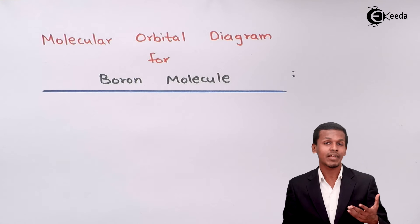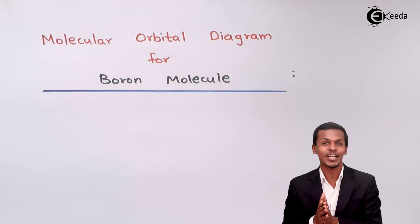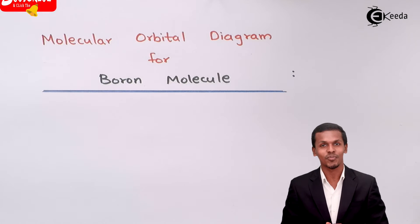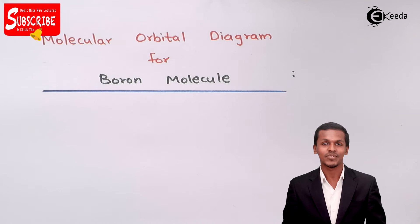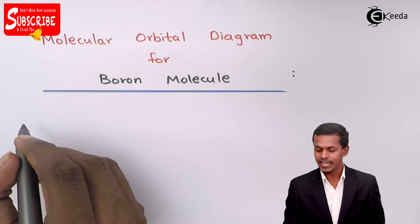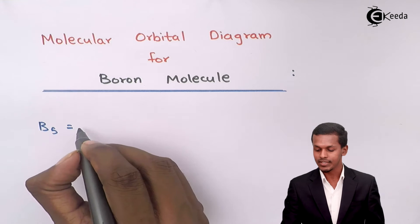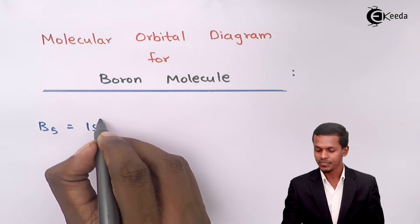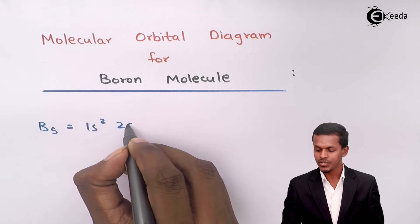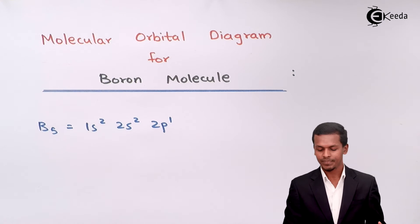We need to know how to represent the electronic configuration of boron. Boron has an atomic number of 5, so we can write the electronic configuration as 1s2, 2s2, 2p1.